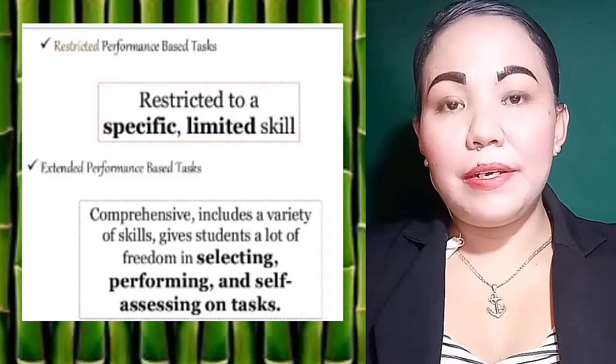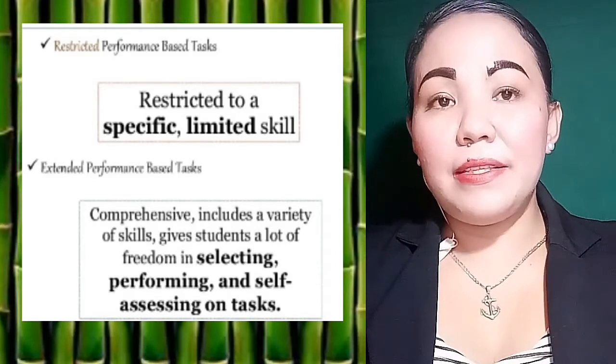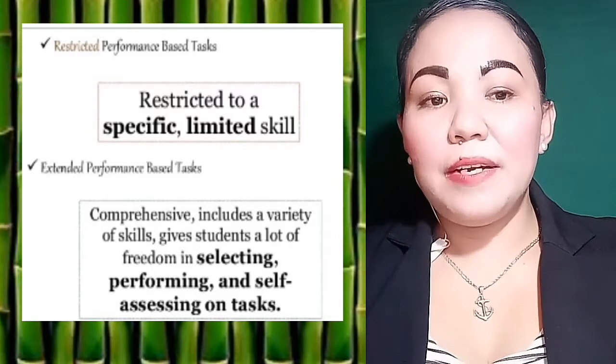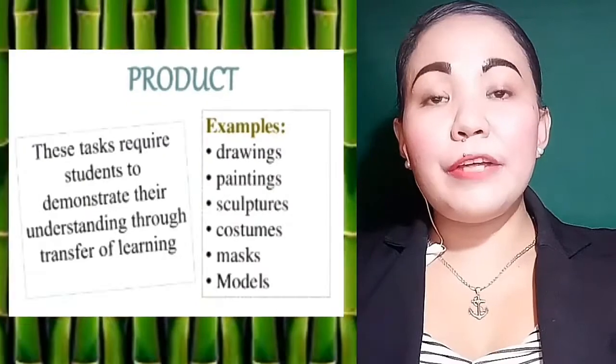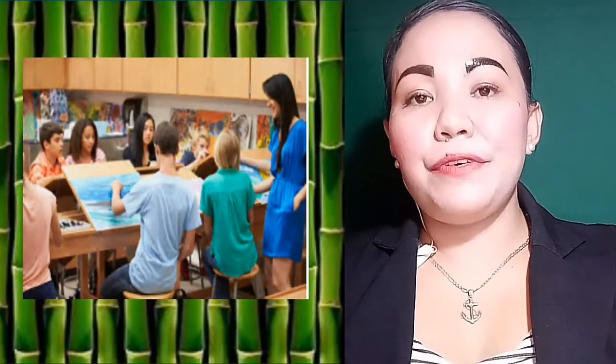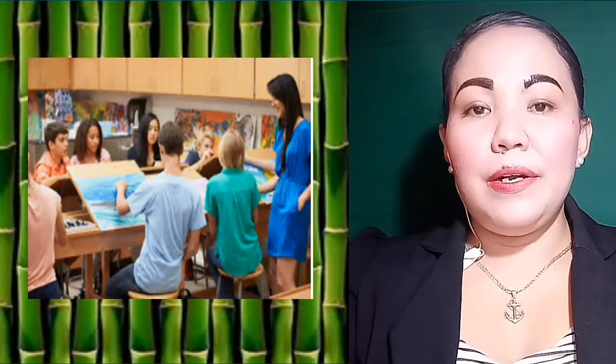An extended performance-based task is comprehensive — it includes a variety of skills and gives students a lot of freedom in selecting, performing, and self-assessing on tasks. The third type is product, which requires students to demonstrate their understanding through transfer of learning. Examples of products are drawings, paintings, sculptures, costumes, masks, and models.